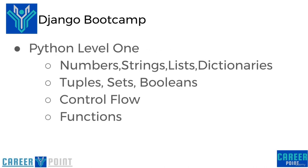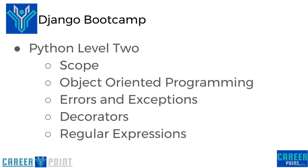In Python level 1 we'll start by talking about basic data types of Python — that includes numbers, strings, lists, and dictionaries. Then we'll talk about tuples, sets, and booleans. Control flow of Python and how it uses indentation, things such as if/else statements. Then we'll talk about functions of Python. Starting at Python level 2 we'll talk about scope, object-oriented programming, errors and exceptions, decorators, and then regular expressions.